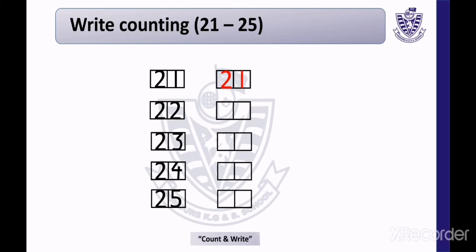What comes after 21? Write 22: 2, 2. And what comes after 22? The number 23 — write 2 in the left block and 3 in the right block. After 23, we write 24: 2, 4. And what comes after 24? Write 25: 2, 5.